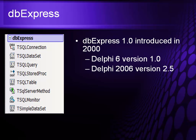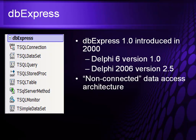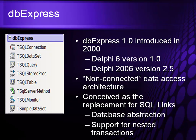DbExpress was introduced in Delphi 6 back in 2000 and has been updated continually through 2006 with version 2.5. It was basically the first non-connected data access architecture, meaning you connect, do some work, receive the information back, and then disconnect. It was conceived as a replacement for the SQL Links technology found with the BDE. It has a high level of database abstraction, meaning you can change from one database to another with very little overhead. It also supports nested transactions, as long as the underlying database supports them.